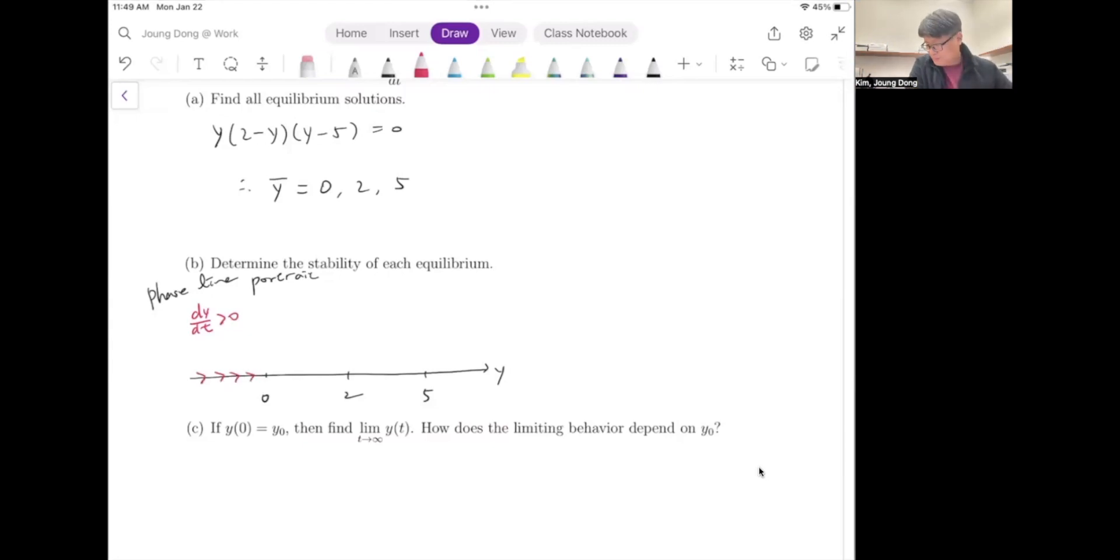And what happened between 0 to 2? When I plug in 1, y will be positive, and 2 minus 1 is also positive. And 1 minus 5 is only the negative. Positive times positive times negative. I have only one odd number negative, which means negative. So my phase line must be drawn like this way.